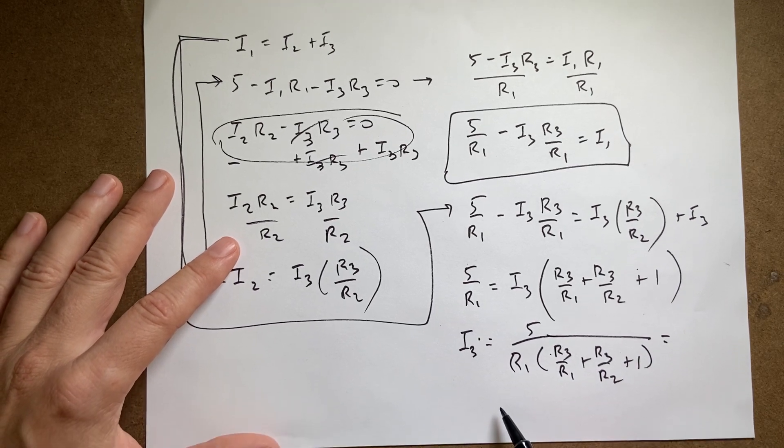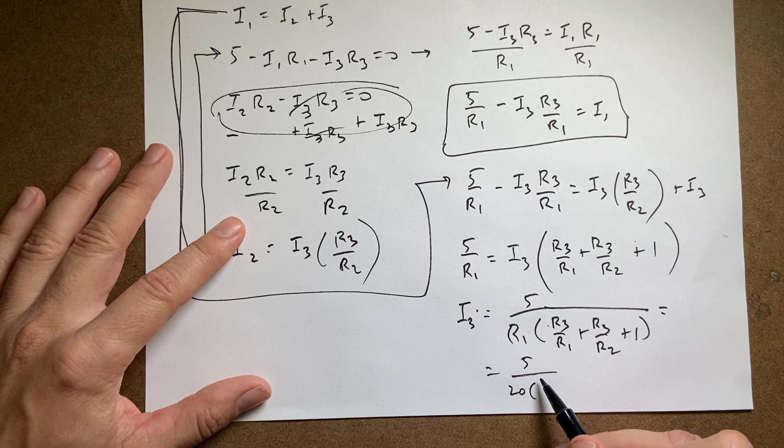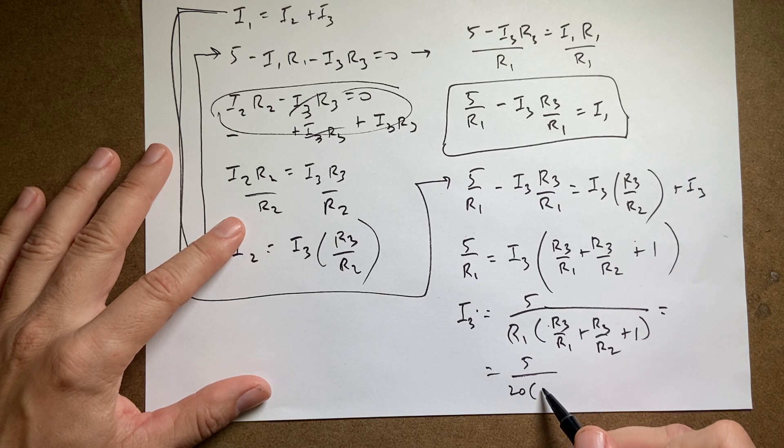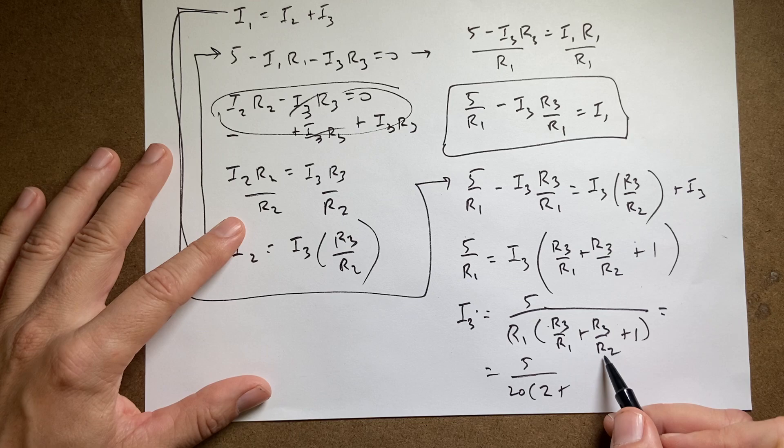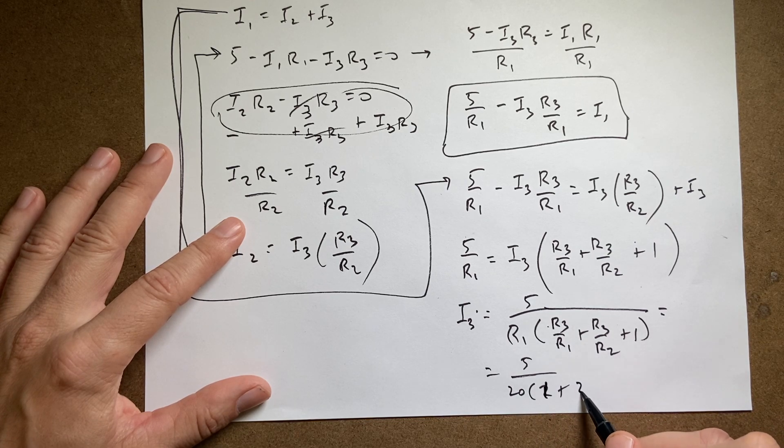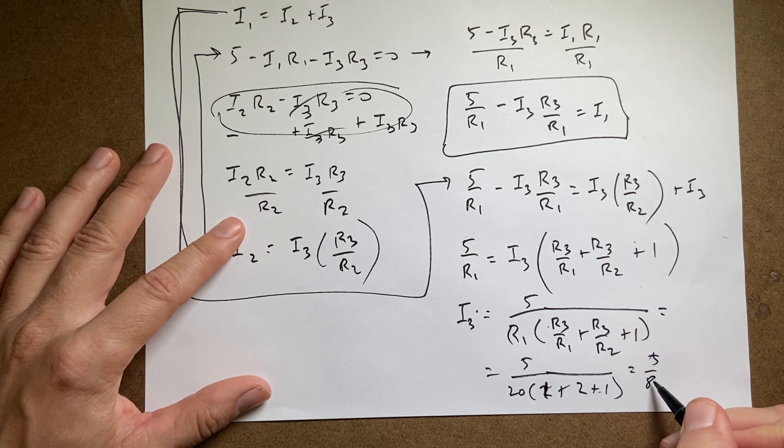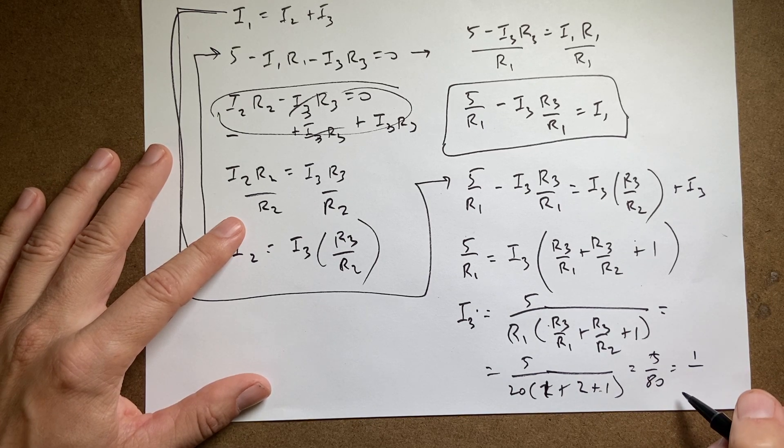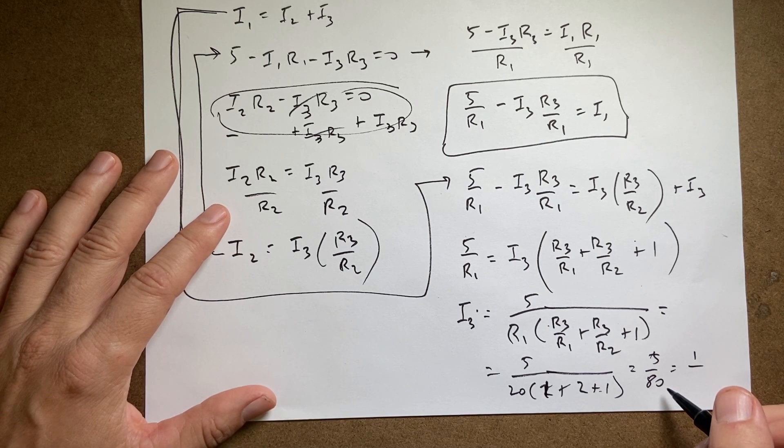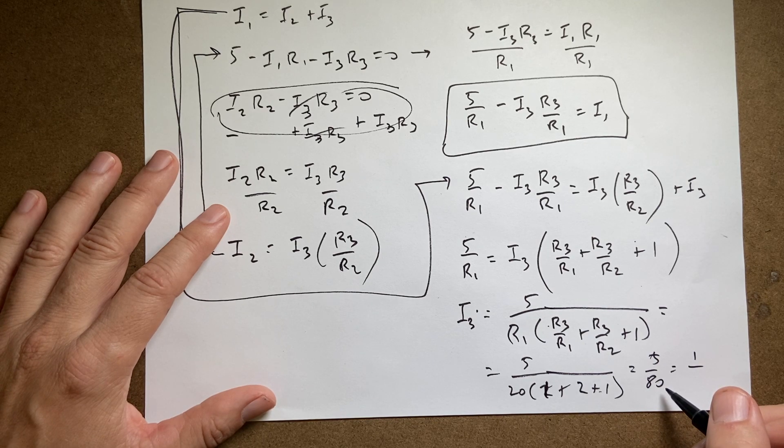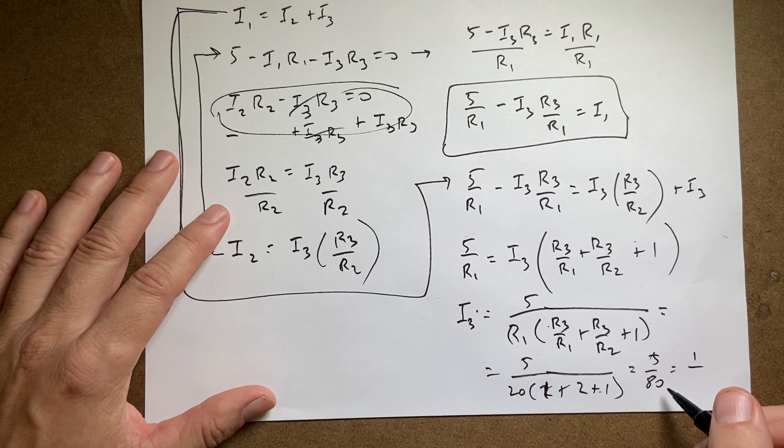So I can put these numbers in. 5 over 20 times 20 over 10. So 20 over 10 is 2. Plus R3 over R2. Wait, R1 was 20. This is 1, 1, 2 plus 1. So it's going to be, that's 4. So it's going to be 5 over 80. So it's going to be 1 over, on my mind, so 5 times 20 is 100. What's 5 going to 80? 4. I'm drawing a blank here. 16? 16. 16. Is it 16? Yes.